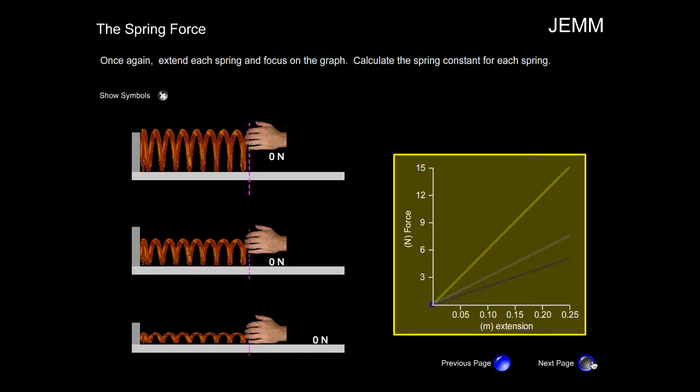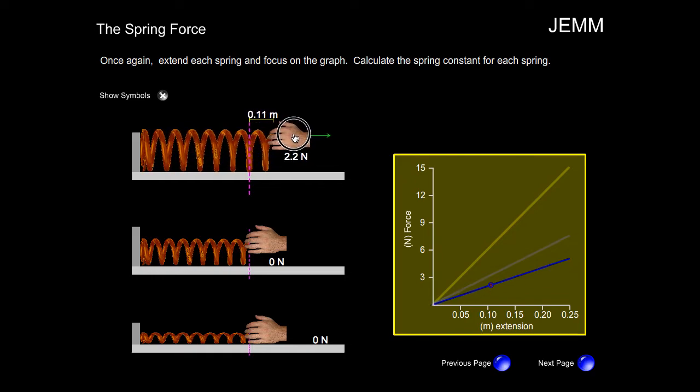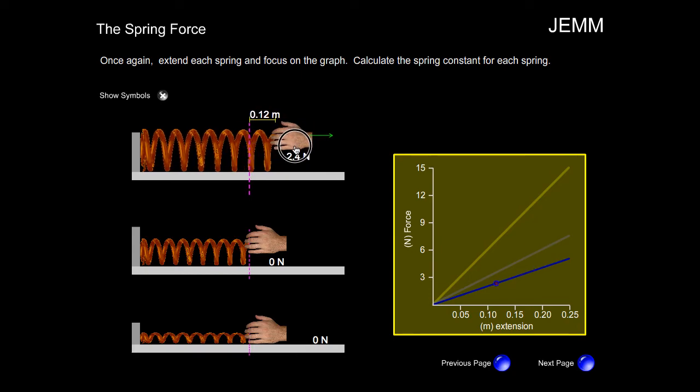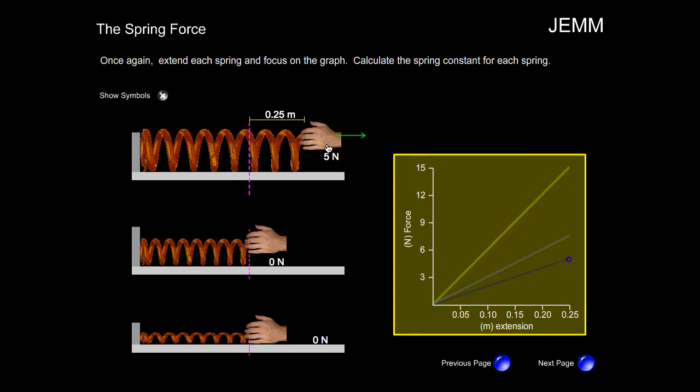If we were to graph these results, it would look something like this. Here is the first spring. Notice the slope here on the graph is the least.